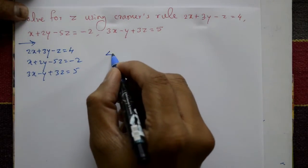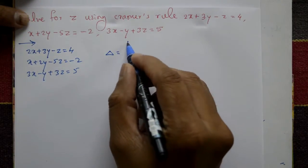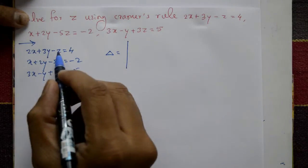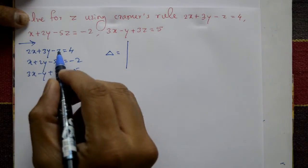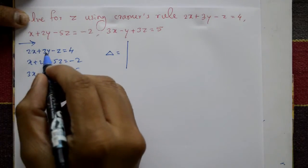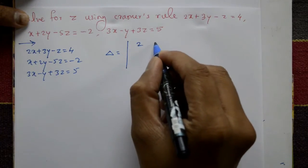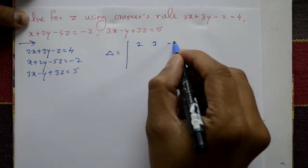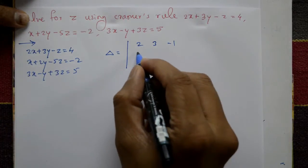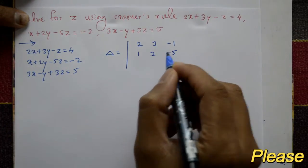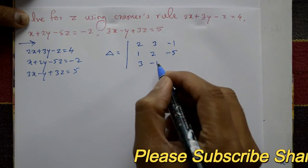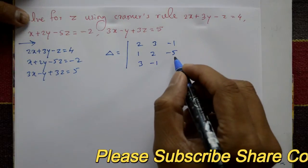Now find Delta. Delta is equal to the determinant of the coefficients of x, y, and z from all three equations. First equation: 2, 3, minus 1. Second equation: 1, 2, minus 5. Third equation: 3, minus 1, 3.